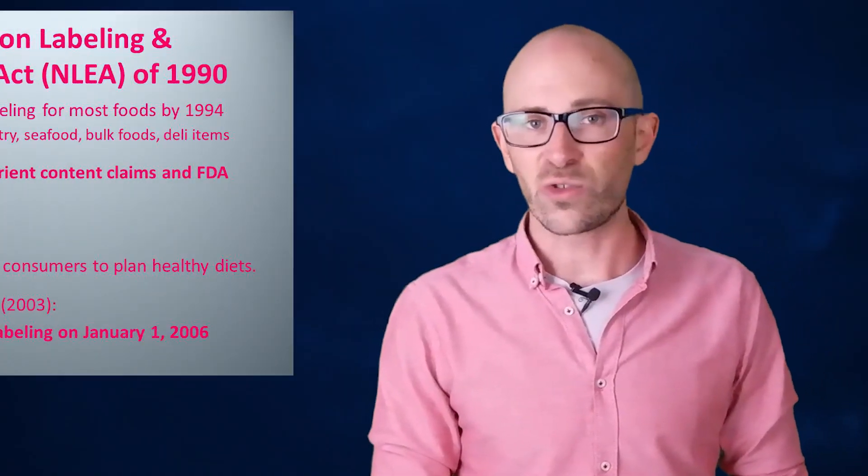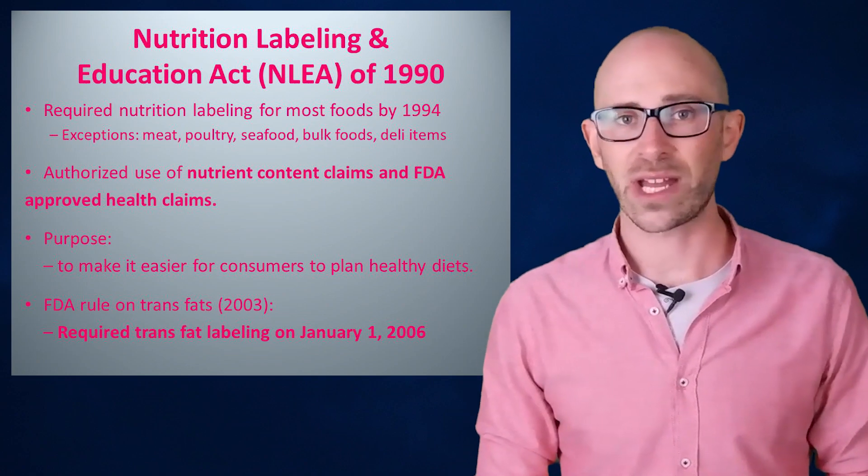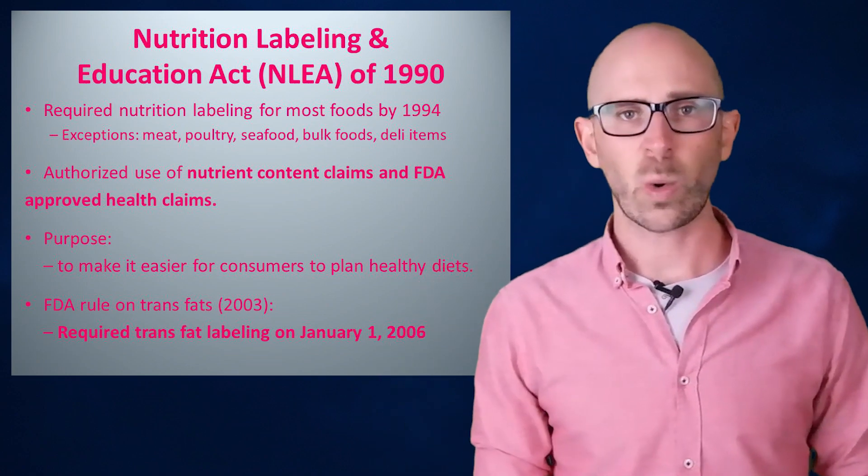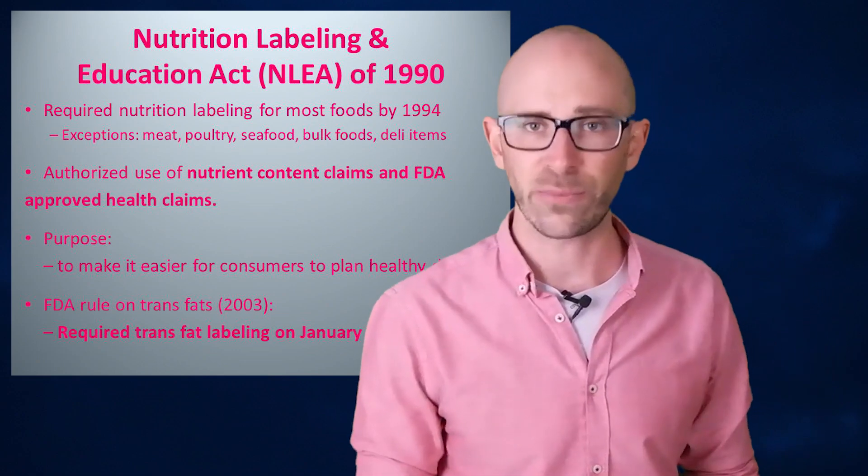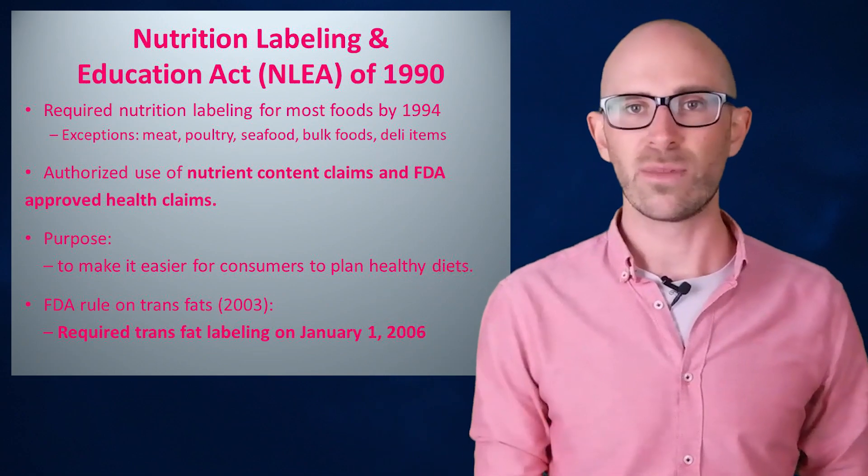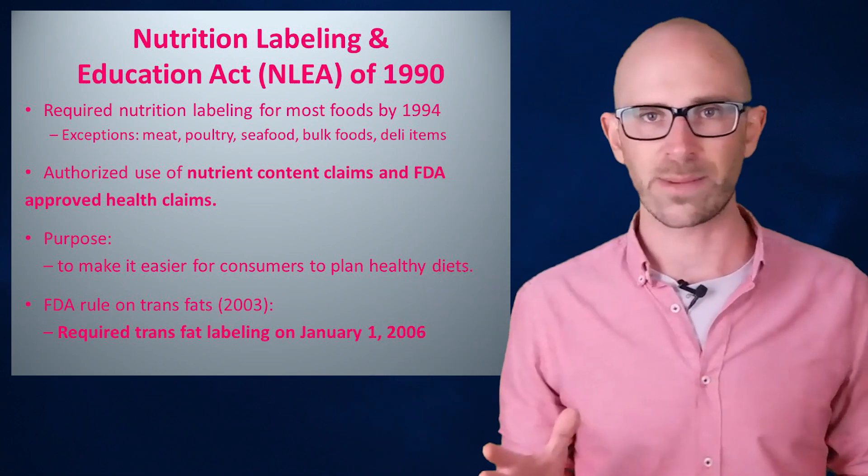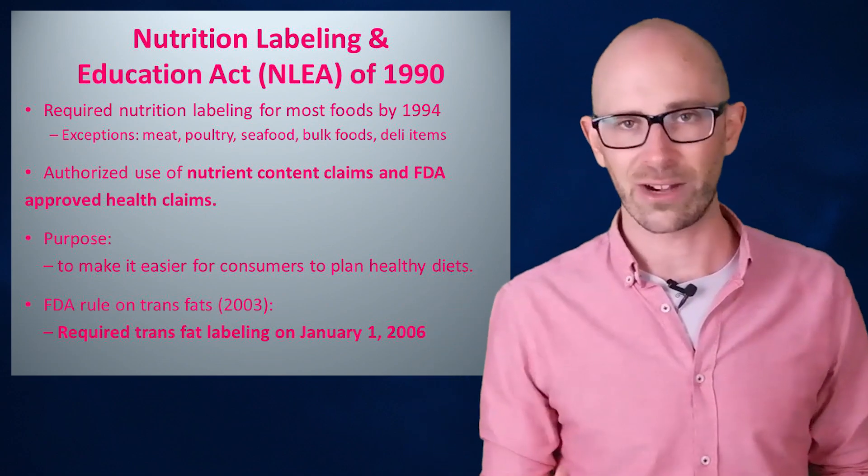In 1990, under the Nutrition Labeling and Education Act of 1990, the FDA began requiring food manufacturers to label the amounts of nutrients and calories contained in their products. This act resulted in moving away from the bomb calorimeter method for determining the number of calories in food.